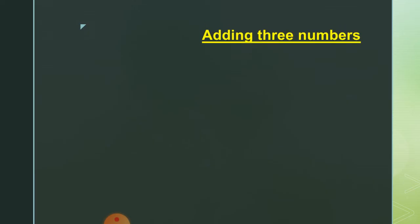Now we are moving forward to add three numbers. The first number is one, we add six, and then we add three. In front of one we draw one line, in front of six we draw six lines, and in front of three we draw three lines. Counting all lines: one, two, three, four, five, six, seven, eight, nine, ten — the answer is ten.